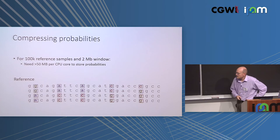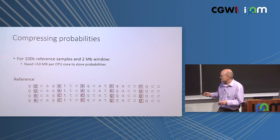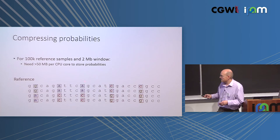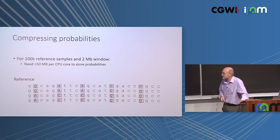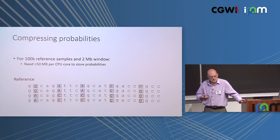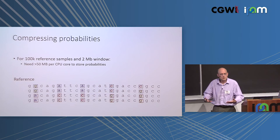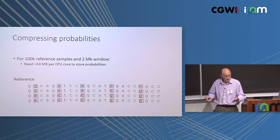The biggest challenge is storing the state probabilities. The Baum algorithm requires memory for every state probability — every reference haplotype at every polymorphic marker. For 100,000 reference samples and a two-megabase window, you need about 50 gigabytes per CPU core. With 20 cores on a compute server, that's a terabyte of memory — which is not practical. So you have to compress the state probabilities.